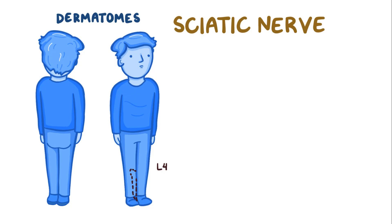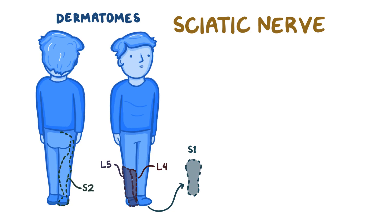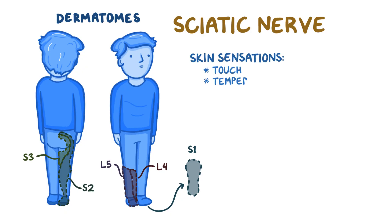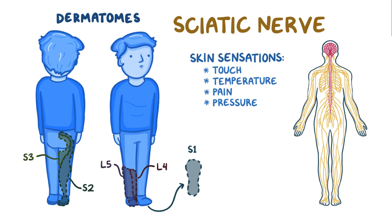L4 covers the medial side of the leg, L5 covers the lateral side, S1 covers part of the dorsum and the entire sole of the foot, S2 covers the back of the leg, while S3 covers the back of the thigh. Skin sensations like touch, temperature, pain, and pressure are carried to the spinal cord and then to the brain where we register the sensations.